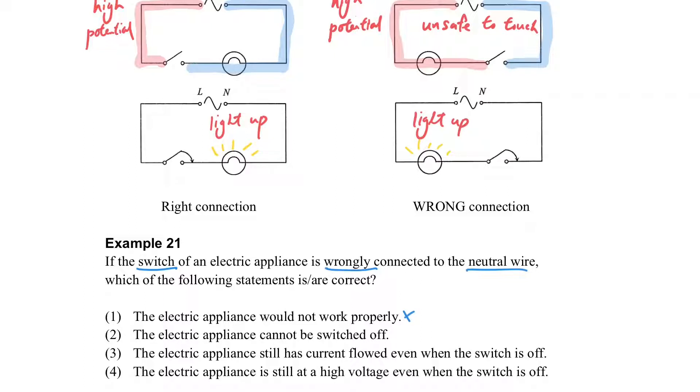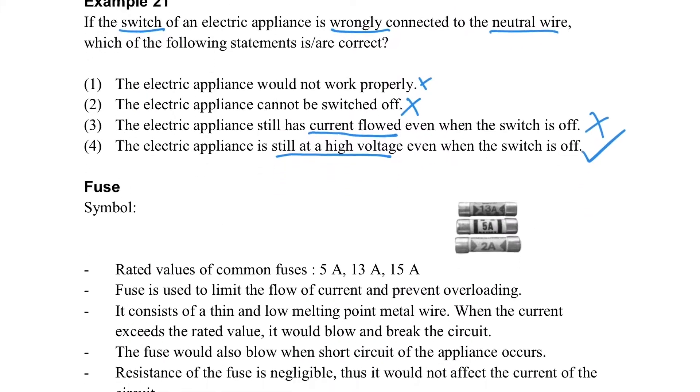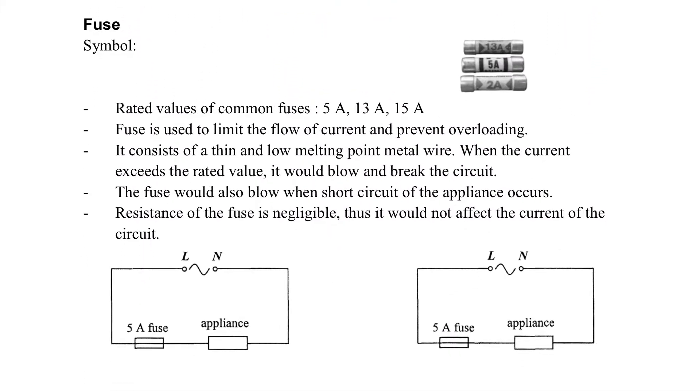So let's see example 21. See whether you can get it correctly. Yes, the first two statements are wrong. Because the electric appliances still work. But the electric appliances is at a high potential when the switch is off.